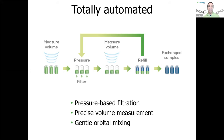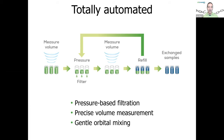We fully automated what you would normally have to do manually. If you think about how you normally do buffer exchange by centrifugation filters — you add a volume, check the volume, put it in the centrifuge, wait, come back, look at what volume has been removed, then add new buffer and repeat. What we automate is the volume measurement process and that cycle. Instead of centrifugation, we use a pressure chamber pressurized to about 60 PSI with gentle orbital mixing occurring throughout.